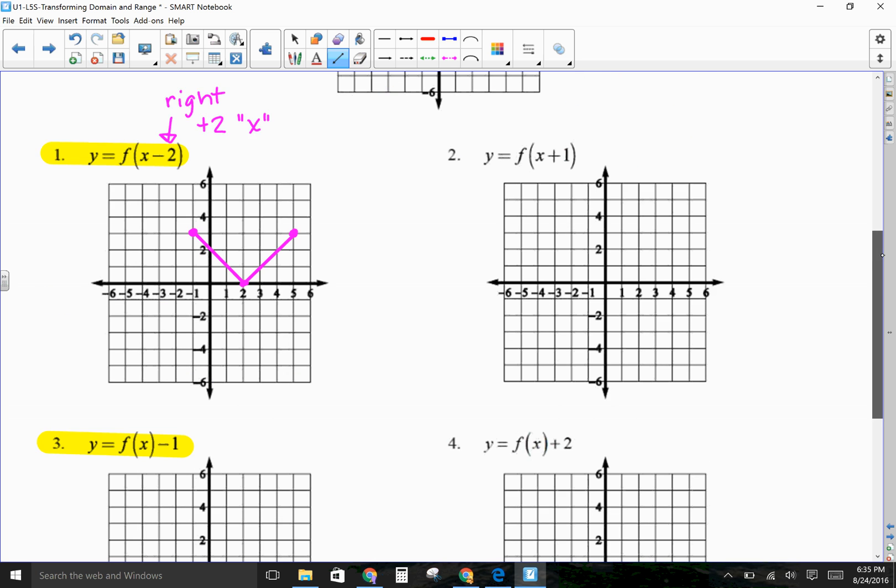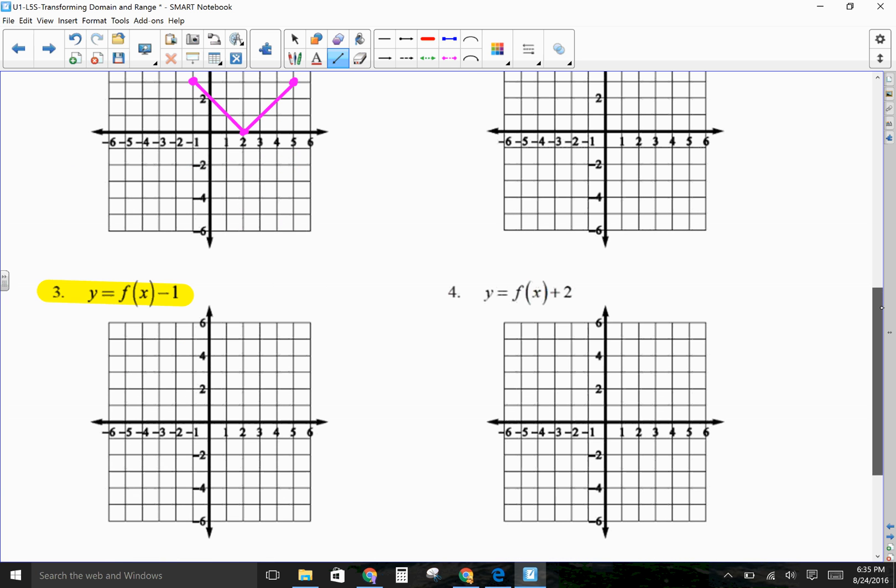So, that's one example. Here is another example. It says, y equals f of x minus 1. This 1 is outside the parentheses. Outside affects the y. And we do the same thing. So, minus 1 means I'm going to go down 1 unit. And I'm going to subtract 1 from each y value.